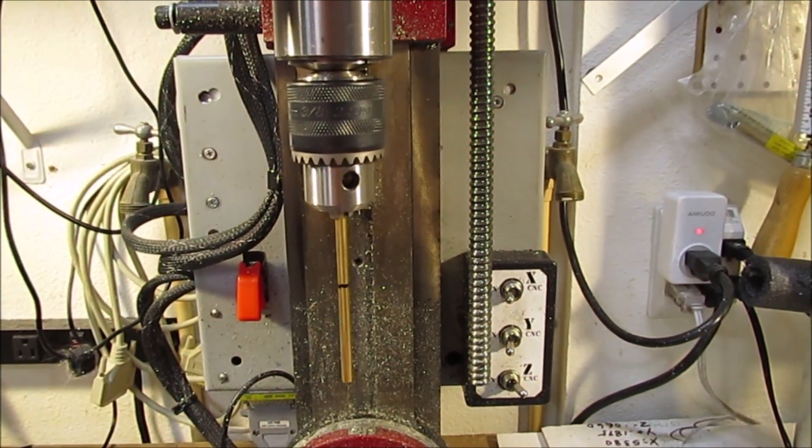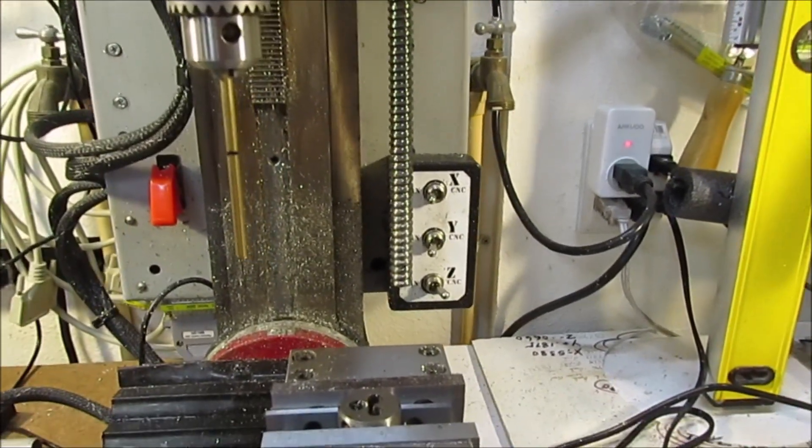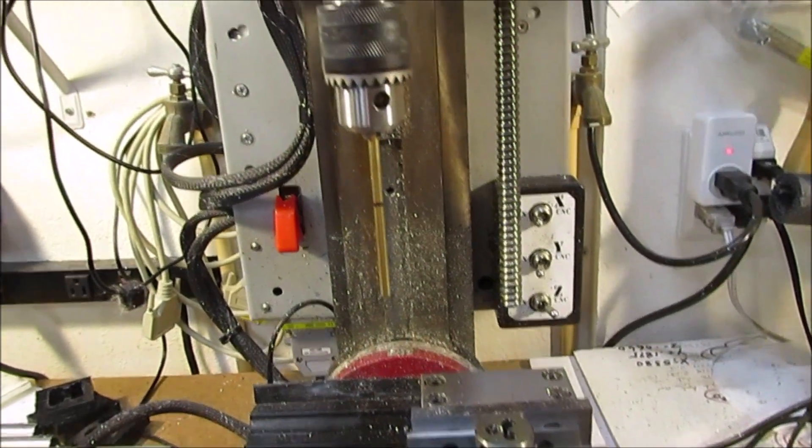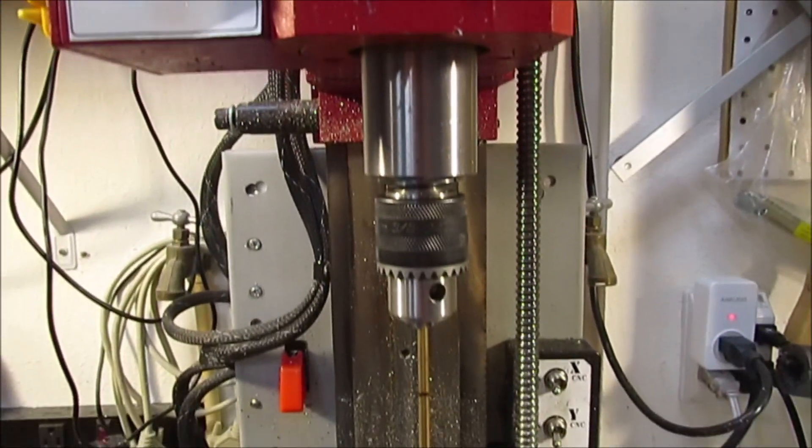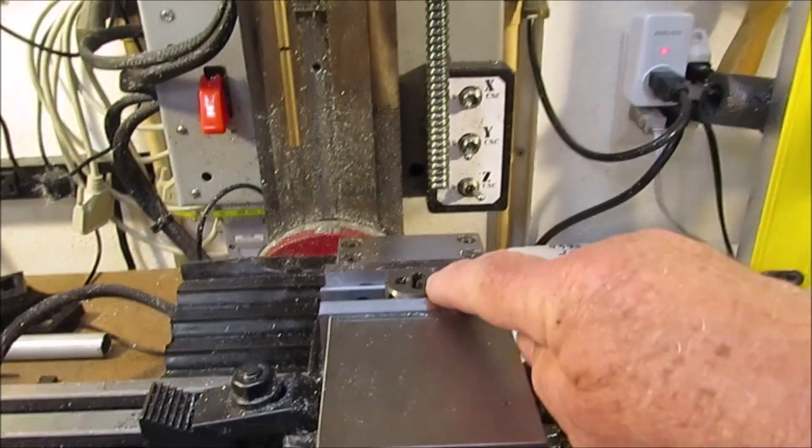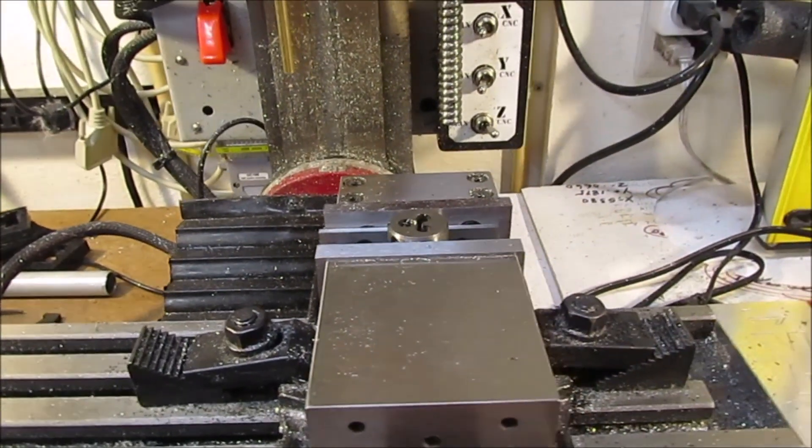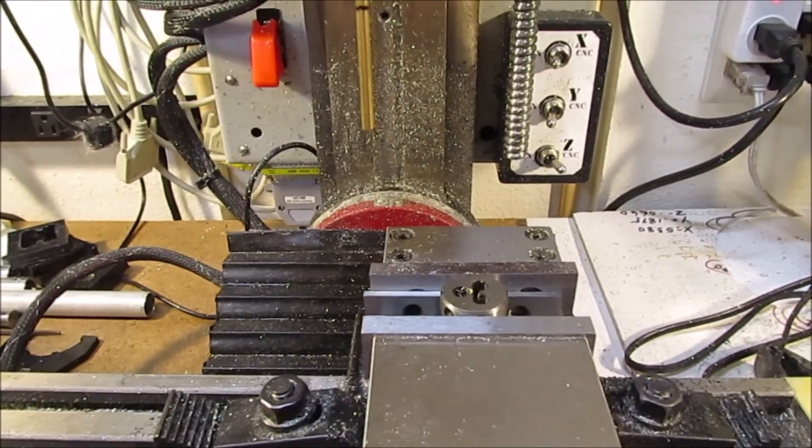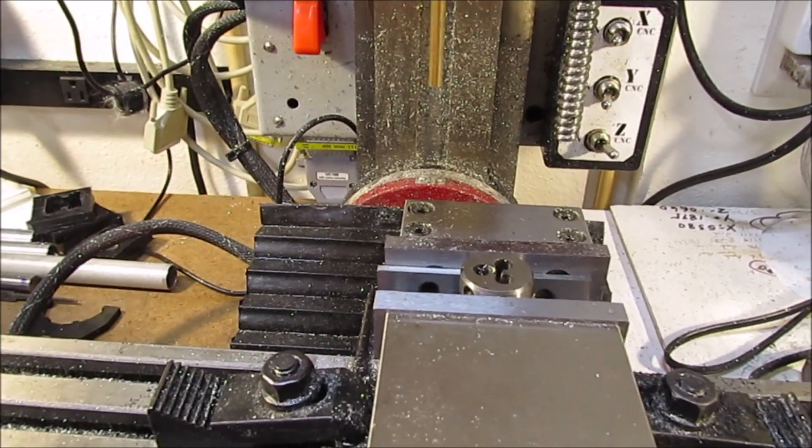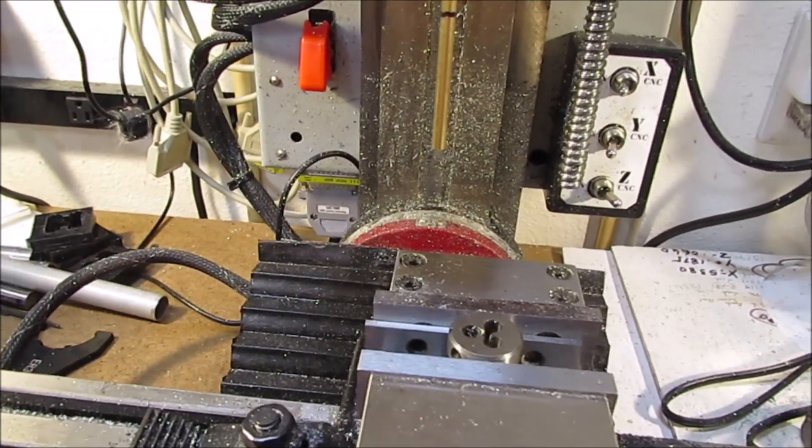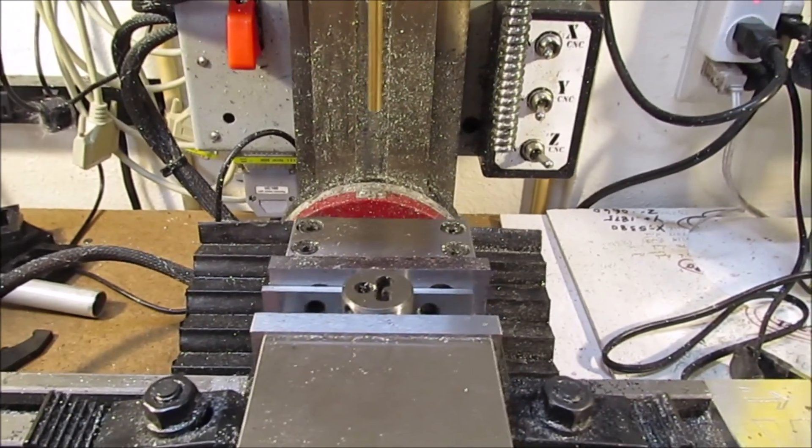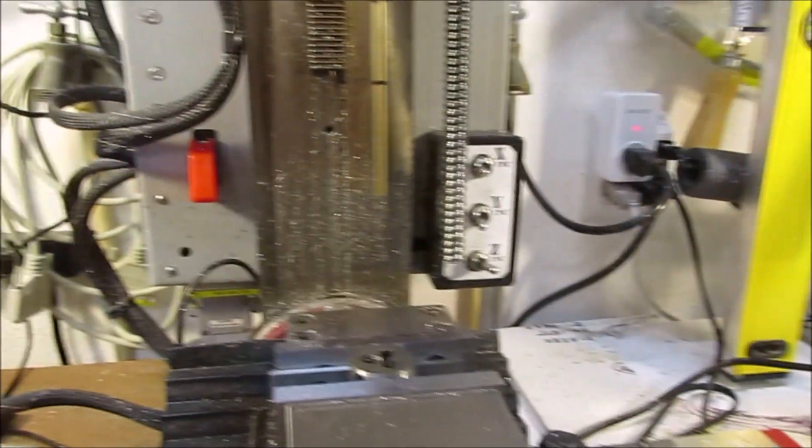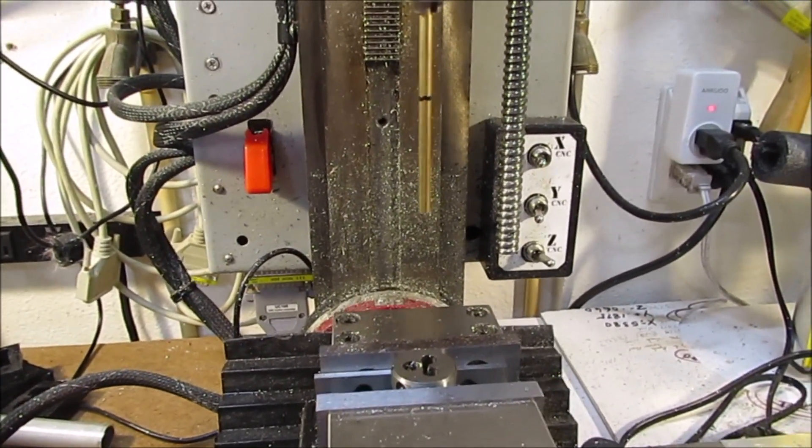Sometimes it threads crooked, it's almost impossible to keep the die straight on the rod. So what I'm going to try to do is, I got it chucked up here and I put the die in my vise and I'm going to line the two up here manually. And then I'm going to bring the z-axis down, get it lined up, and we're going to see if this works.